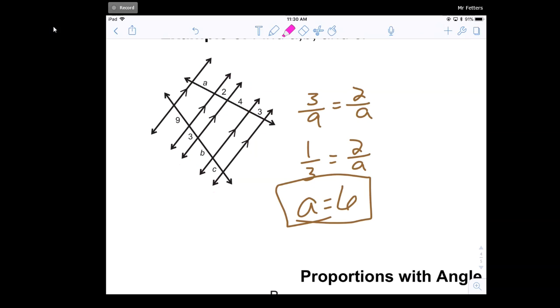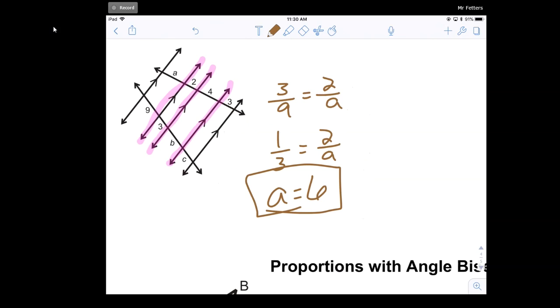To find B, I'm going to look at this line, this line, and this line. So now this is going to be 3 over B is equal to 2 over 4. And 2 over 4, I can reduce to 1 half. So 3 over B is equal to 1 over 2. Then B is equal to 6.